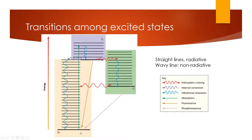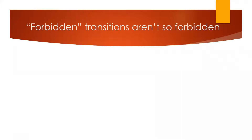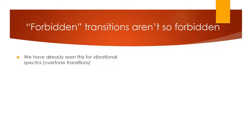The first thing we're going to want to address is what is happening when these molecules absorb light, and why do we say that triplet state absorption is forbidden when we clearly see that phosphorescence can happen. Going back to vibrational spectroscopy, we remember what forbidden means. Forbidden really isn't so forbidden — we are often capable of seeing these forbidden transitions. We saw the overtone transitions for vibrational spectroscopy.